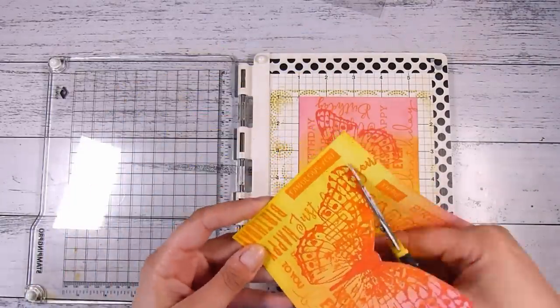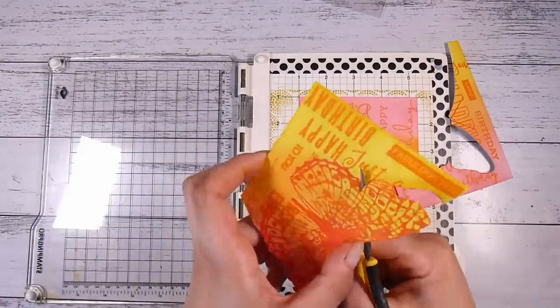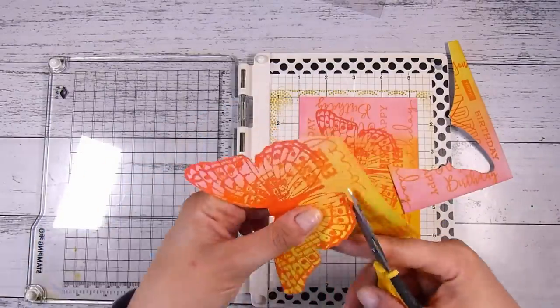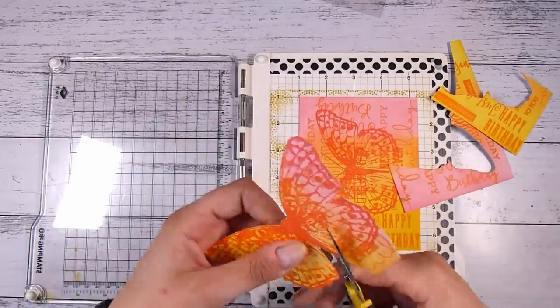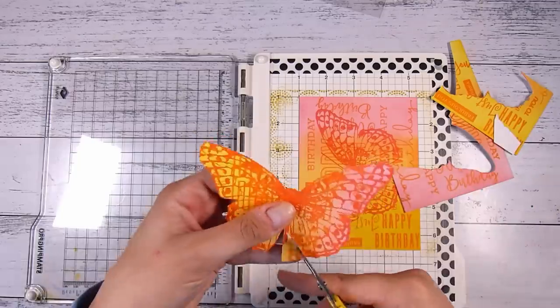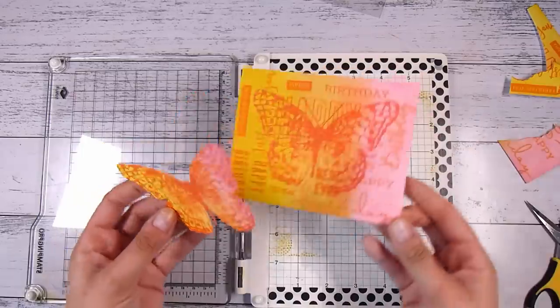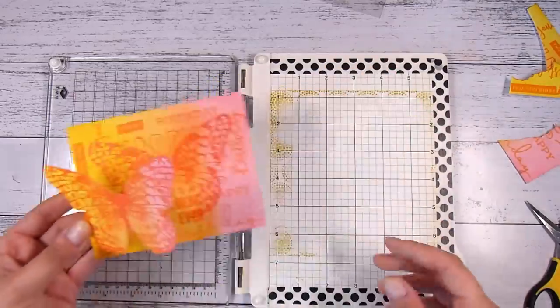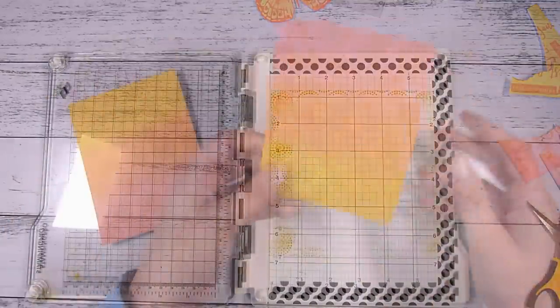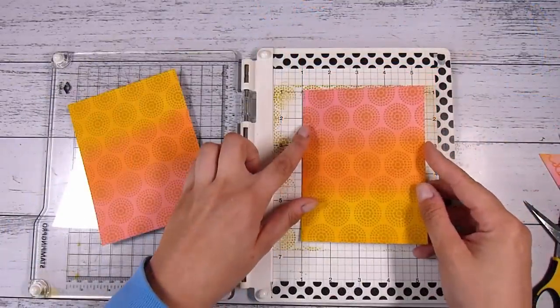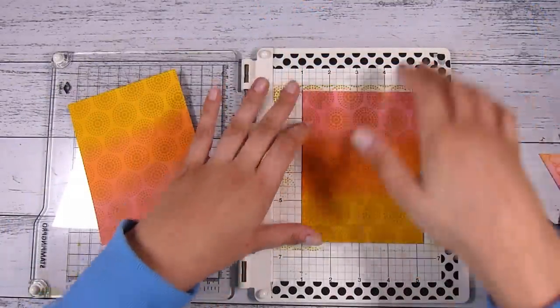Then I'm going to fussy cut out the image. Now one of the pros of being able to stamp the image on the second panel is that things like the antennae from the butterfly—I don't have to worry about cutting out because they're already stamped underneath. So I'm not going to spend my time doing that at all. And the idea here is that we can have a popped-up image as well as having the pattern in the background continue.